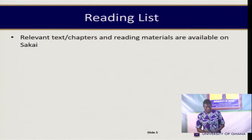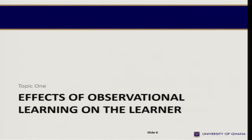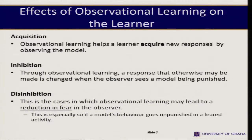You can get other material online on Sakai that will be placed there for you. Let's take the first topic: effects of observational learning on the learner. The first point is acquisition. Observational learning helps the learner acquire new responses by observing the model. It allows the learner, after observing the model's behavior, to acquire new responses that the person may not have previously had the capacity or skills to produce.